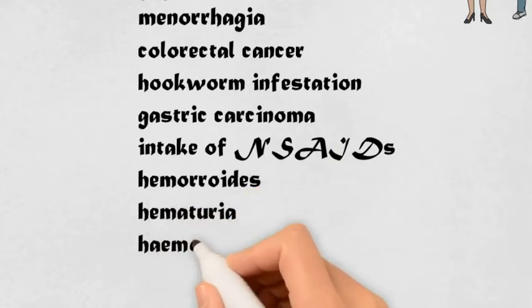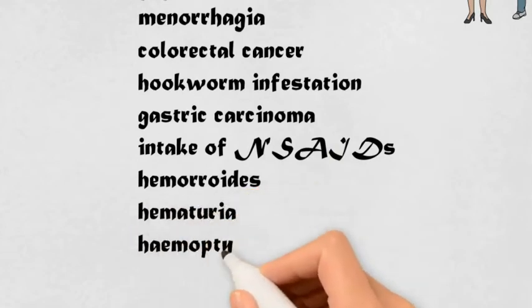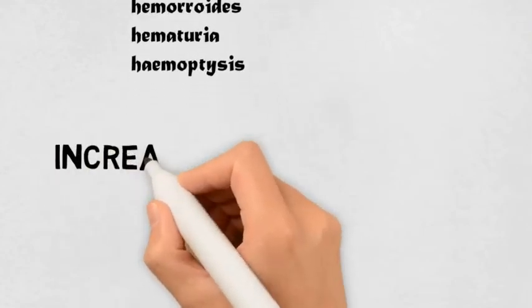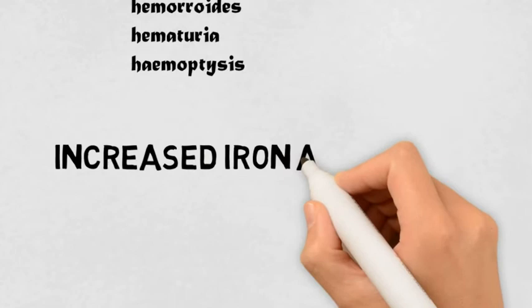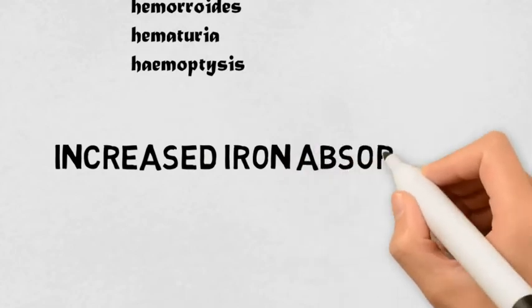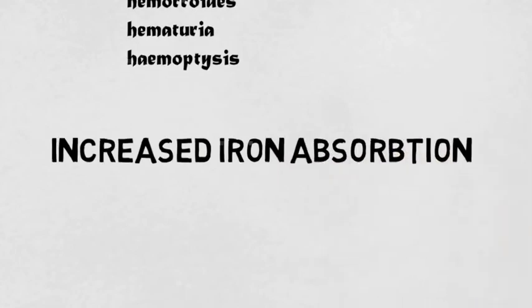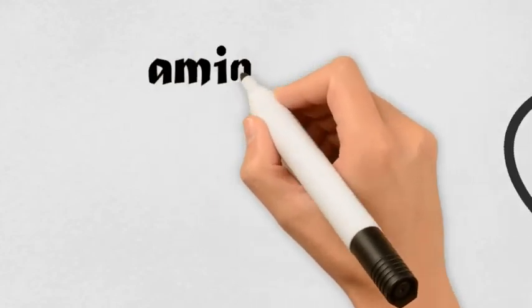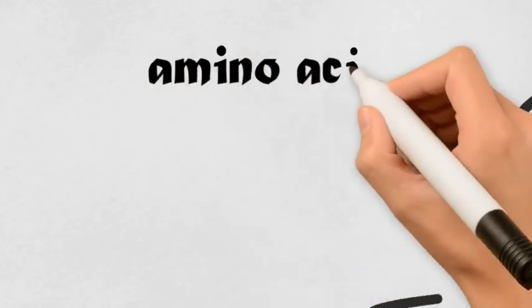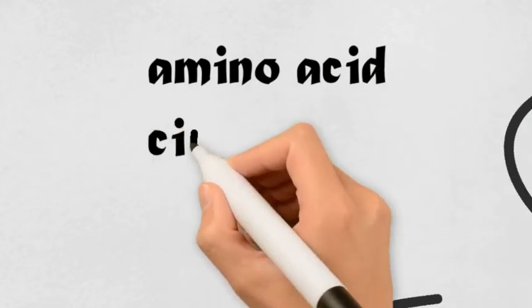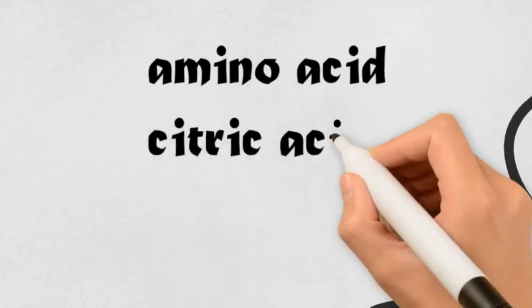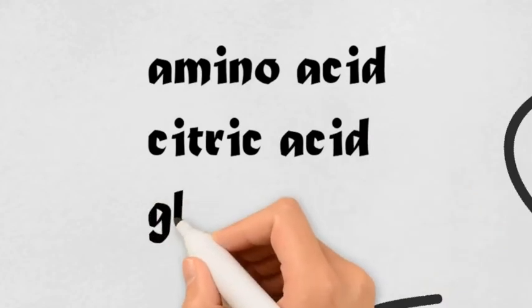Substances which increase the absorption of iron are amino acids, citric acid, and glucose. Ascorbic acid also helps in the absorption of iron by reduction of iron.